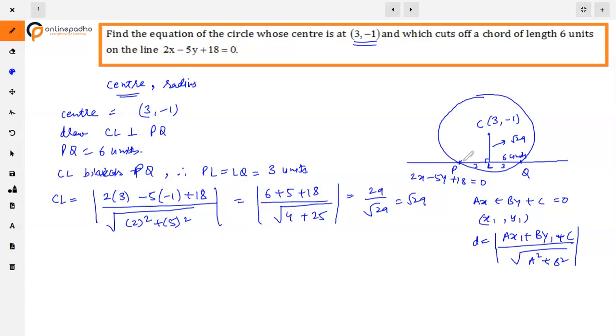CL's length is square root 29, so using Pythagoras we can find CP's length. In triangle CLP, CP² = CL² + PL², which means CP² = (√29)² + 3² = 29 + 9 = 38. So CP = √38. The radius is √38 units.